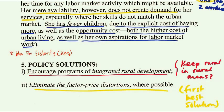You should encourage programs of integrated rural development. Eliminate the factor price distortions where possible — economists, almost to a person, believe that free markets will yield the best results. If you have distortions, you should remove them as soon as possible so the economy can reach its efficient outcome.